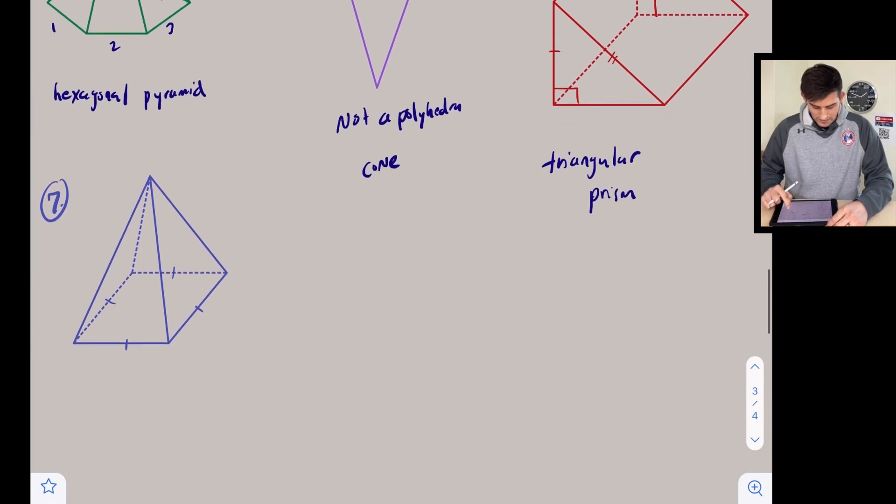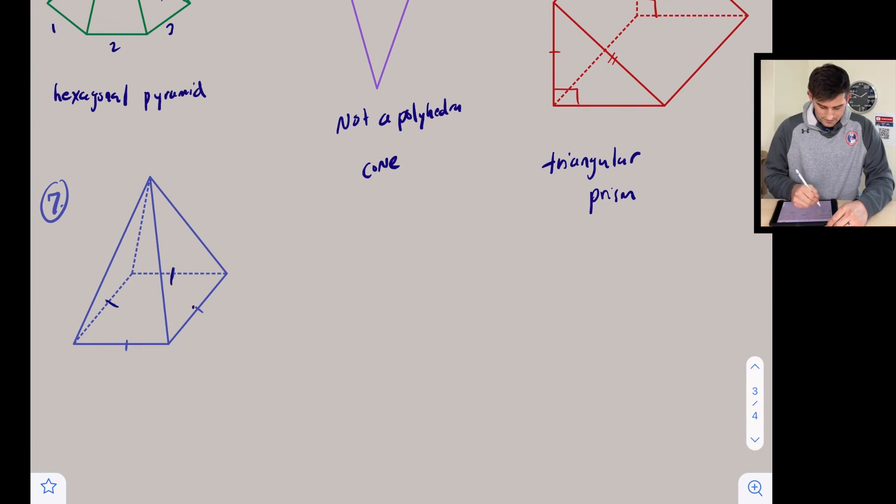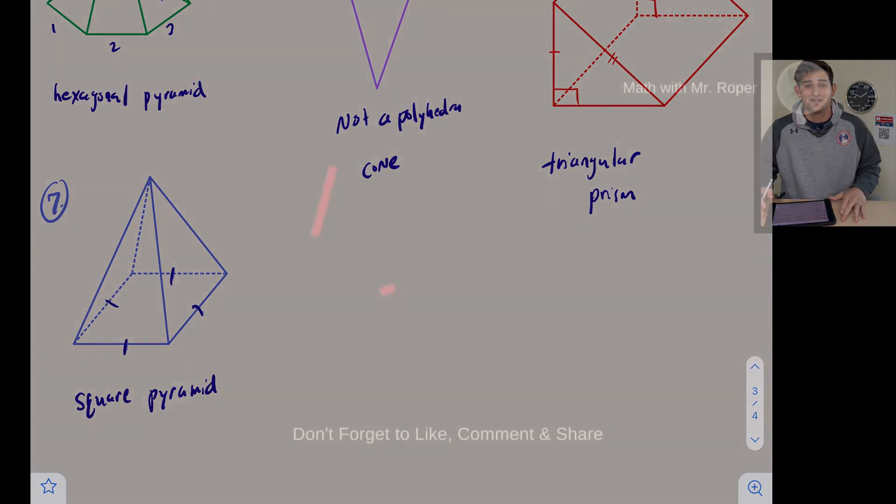And lastly, we have a square at the bottom because all of these sides are equal to each other. Then all of the faces meet at a point at the top, so we will call this a square pyramid. And that is how you classify solids.